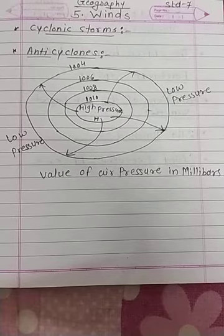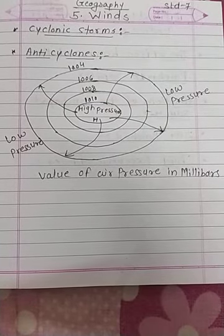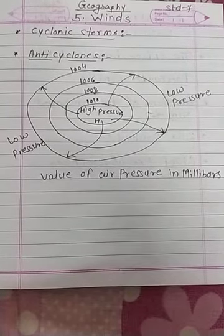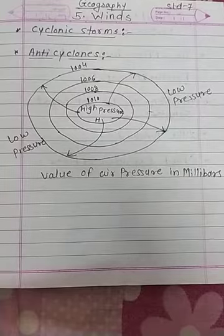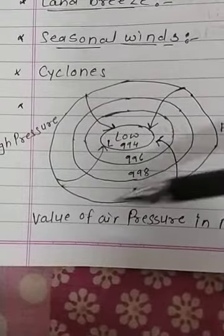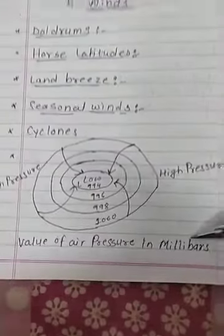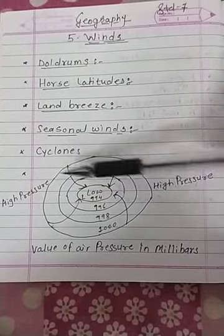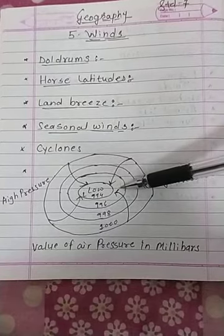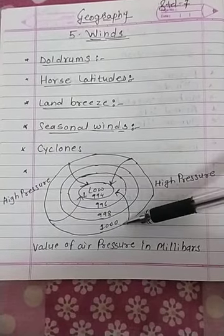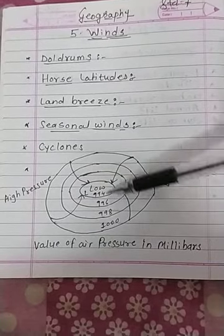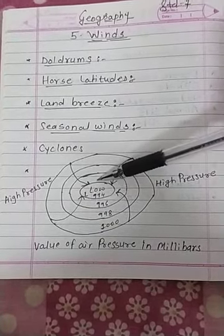Next point: Anti-cyclones. When we study about the cyclone, you must have understood that it always works from high pressure towards low pressure. Here is the diagram of the cyclone. The value of pressure is in millibars. You can see the arrows going towards the low pressure — that means it works from high pressure towards low pressure: 1998, 96, 94.